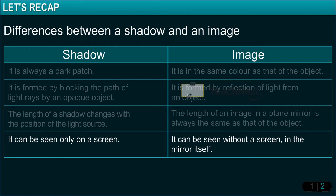A shadow can be seen only on a screen, whereas an image can be seen without a screen — in the mirror itself.